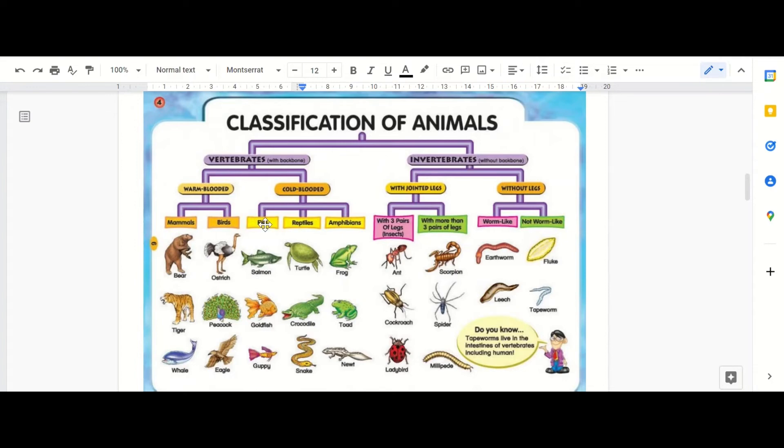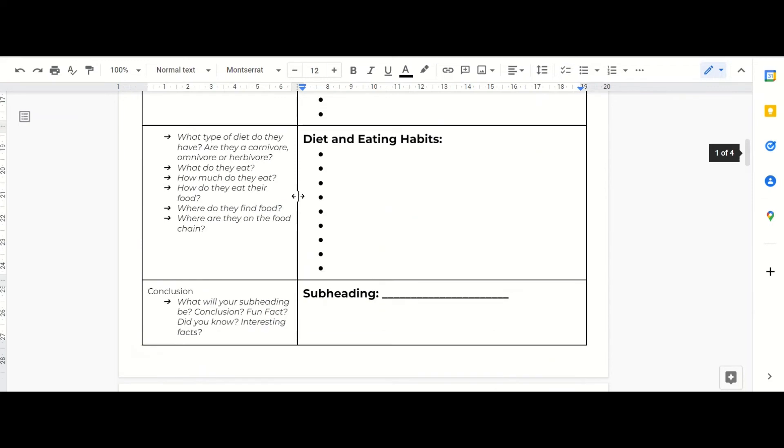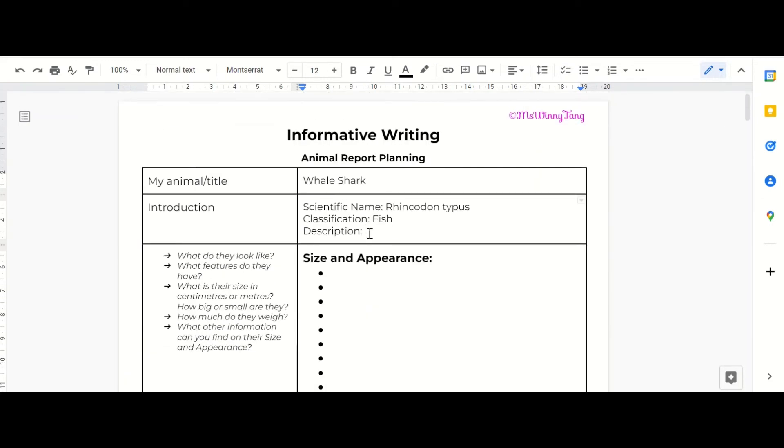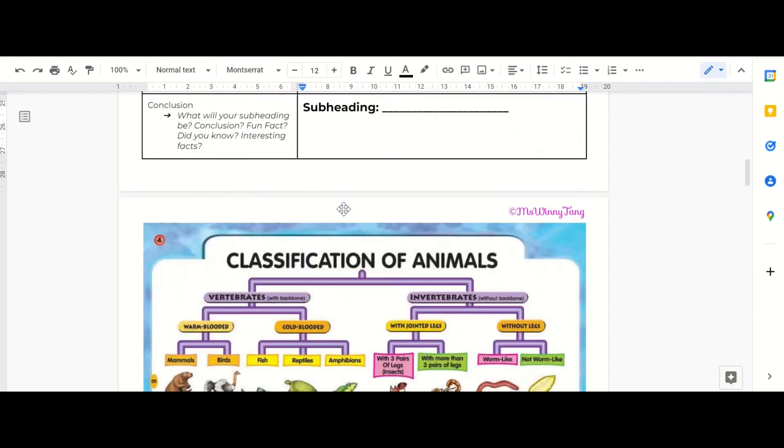What we can do because it is classified under fish, we can also describe it a little bit. So we can say that they're cold-blooded. Someone actually put that in here - cold-blooded vertebrae.